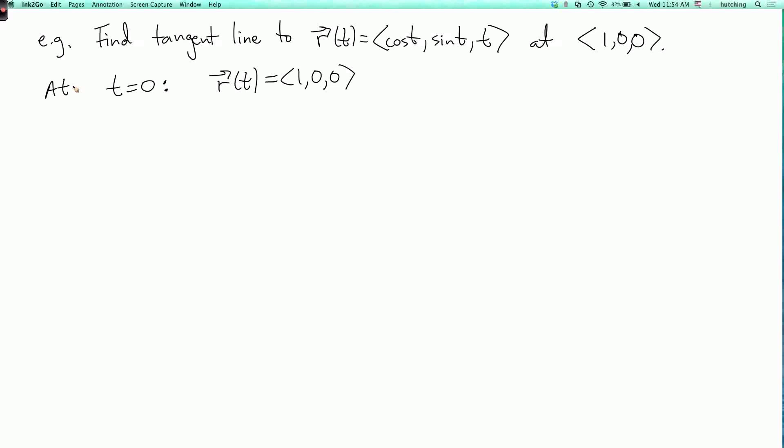And then the tangent vector is R prime of zero, or the velocity vector. So this is minus sine t comma cosine t comma one, and we have to evaluate this at t equals zero. And so we get the point zero comma one comma one.